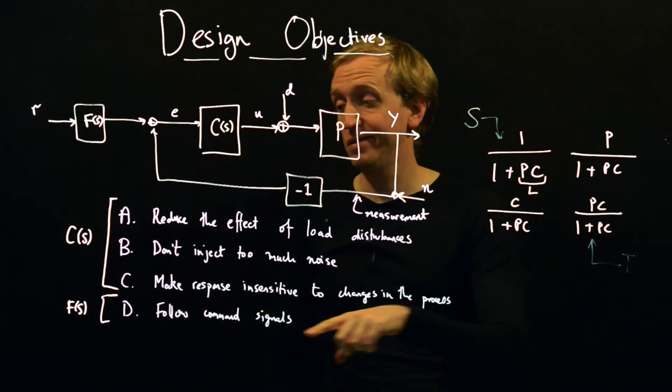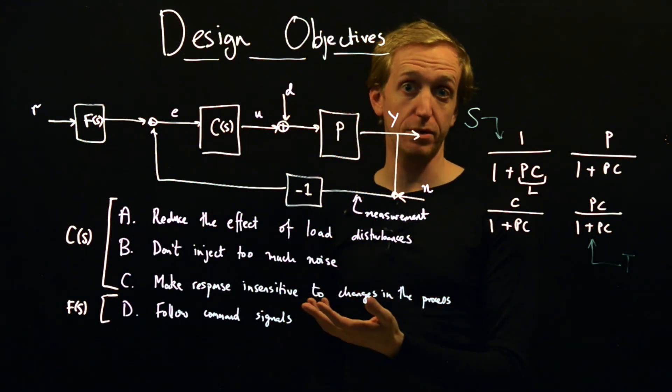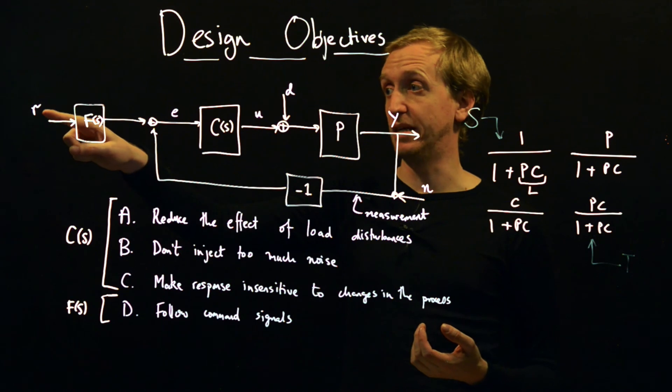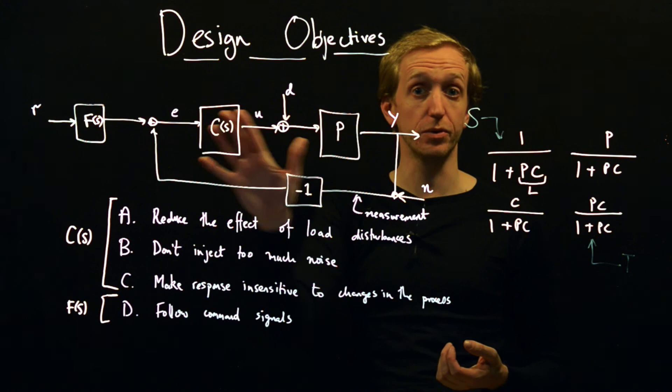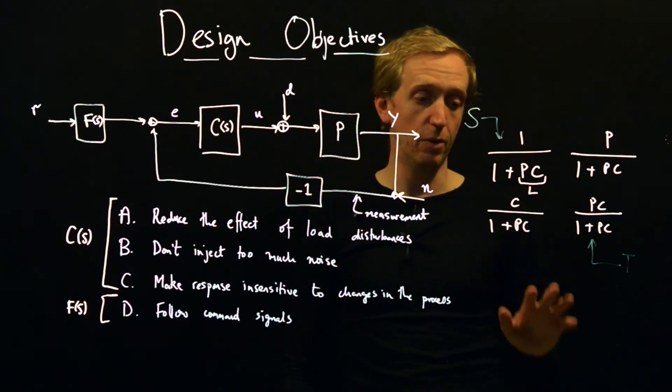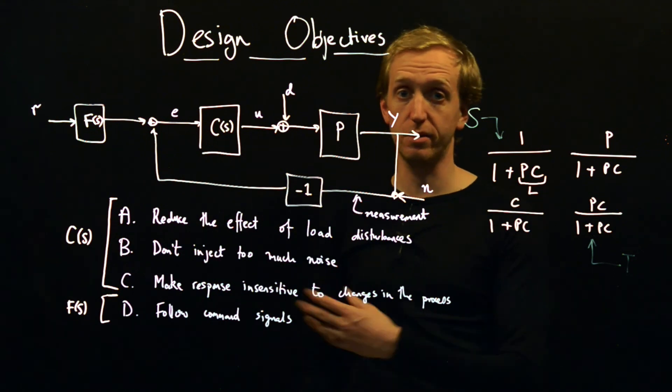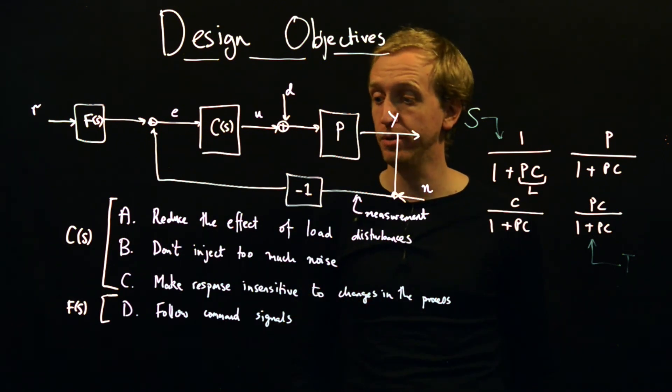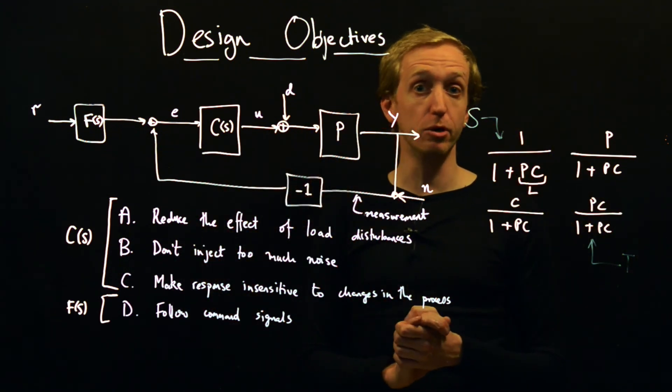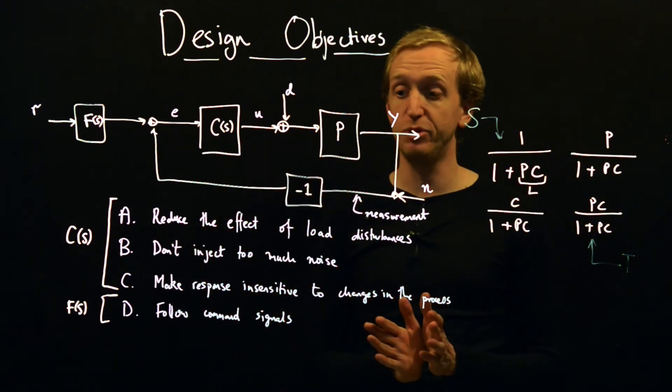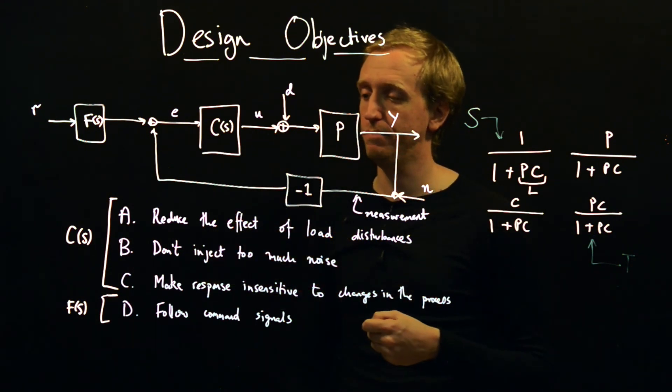If you then want to understand D, we have to introduce more transfer functions, basically to understand the effect of this reference on the various internal signals in this feedback loop. And we get a few extra transfer functions here involving F. And the key ones have been picked out in your lecture notes. But there we have a very kind of big picture overview of control system design objectives. And now we're going to go away and talk about A, B, and C in more detail.